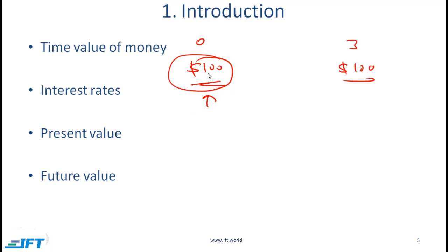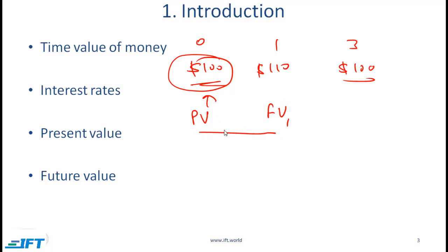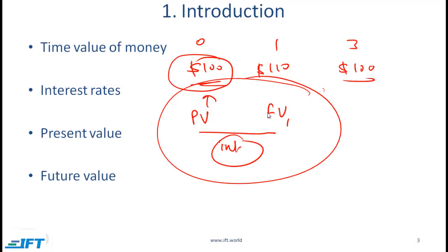The money today, or the value today, is called the present value. At times, this could be an investment which you make at time zero. The value at a future point in time is called the future value. Let's say that you are indifferent between $100 today versus $110 after one year. This $110 is then referred to as a future value at the end of year one. The relationship or link between present value and future value is established through an interest rate, and that is essentially what we will talk about in this reading.